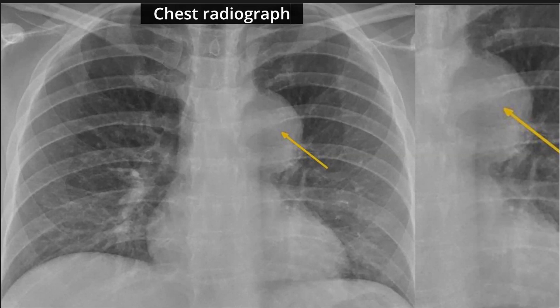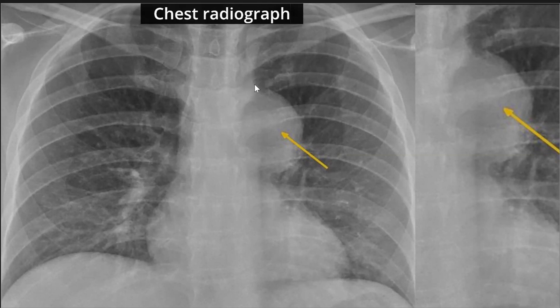This is a new case discussion. We have a young patient with a mass on the chest. The mass is located in the mediastinum because it causes an obtuse angle with the mediastinal contour and it is not surrounded by lung tissue, so it is not a pulmonary mass.